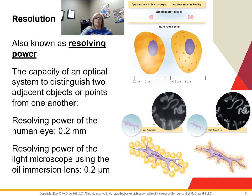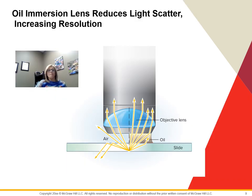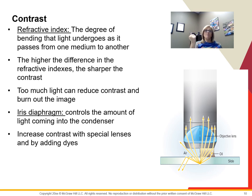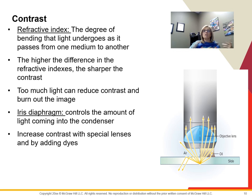Resolution, or resolving power, is what allows you to distinguish two points in an object from each other — basically how clear or fuzzy the picture is. For comparison, the resolving power of your eyes is 0.2 millimeters in normal vision. The resolving power of the light microscope is 0.2 micrometers. We use an oil immersion lens to reduce the amount of light that is scattered and give us much better resolving power — this is what we use in microbiology.